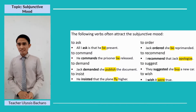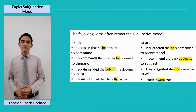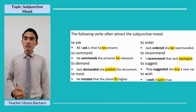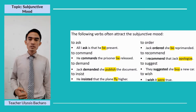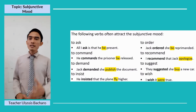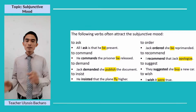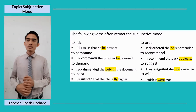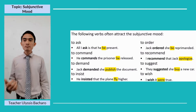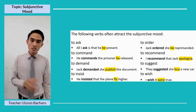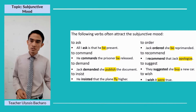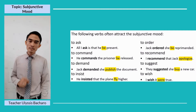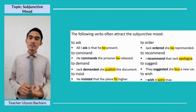These are the verbs that often attract the subjunctive mood: to say, to ask, to command, to demand, to insist, to order, to recommend, to suggest, or to wish. Examples: 'All I ask is that he be present.' 'He commands the prisoner be released' — prisoner is only one but we use 'be released.' 'Jack demanded she publish the document' — 'she' followed by 'publish' instead of 'publishes.' 'He insisted that the plane fly higher' — the plane is only one but we use 'fly' instead of 'flies' because it is subjunctive.